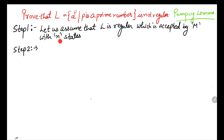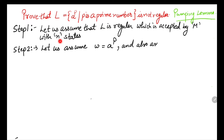Step 2: we have to assume a string. Let w = a^p. We choose a generalized string, and we also assume that p = n, that is p equals the number of states. The length of the string is p, which equals n, so our condition is satisfied.